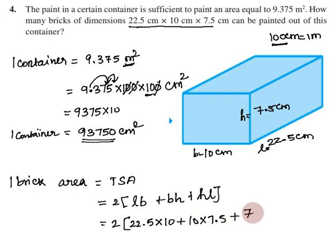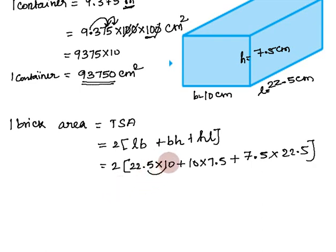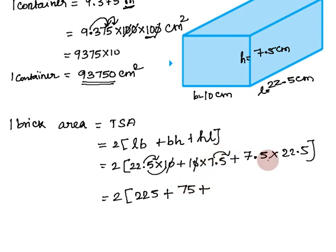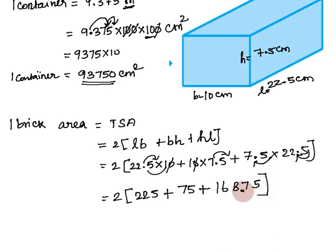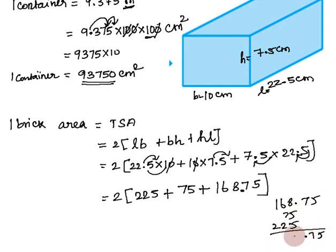Substituting: TSA = 2(22.5 × 10 + 10 × 7.5 + 7.5 × 22.5). Calculating each term: 22.5 × 10 = 225, 10 × 7.5 = 75, and 7.5 × 22.5 = 168.75. Adding these: 225 + 75 + 168.75 = 468.75. Multiplying by 2 gives TSA = 937.5 square centimeters for one brick.